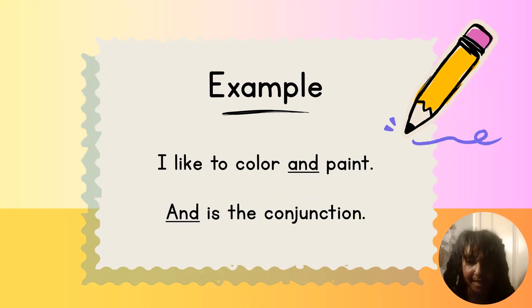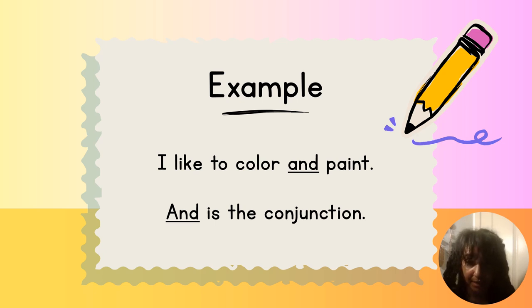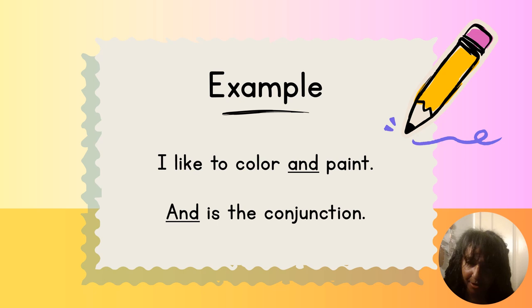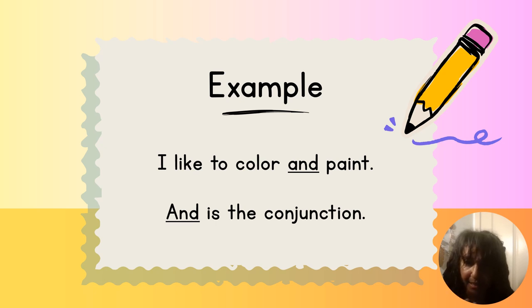All right, here is an example of one of the sentences you might have said: 'I like to color and paint.' 'And' is the conjunction — do you see what it's doing there in the sentence? We're finding out that someone likes to do two things: color and paint. Do you see how the word 'and' is joining two different hobbies or likes together?